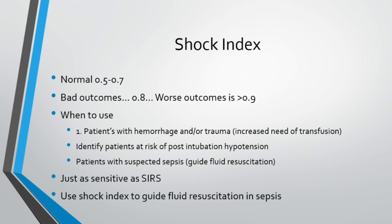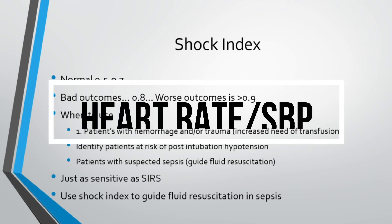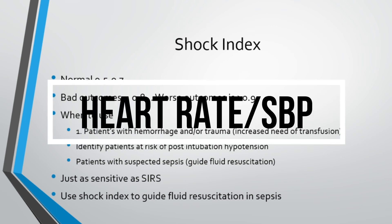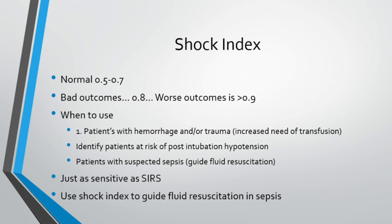Now we'll talk about shock index. The shock index is an assessment that gives you a number indicating the level of shock — especially in trauma or acute hemorrhagic patients — based on just two vital signs: heart rate divided by systolic blood pressure. A normal shock index is between 0.5 and 0.7. At 0.8, patient outcomes start to worsen, and anything over 0.9 is extremely concerning.